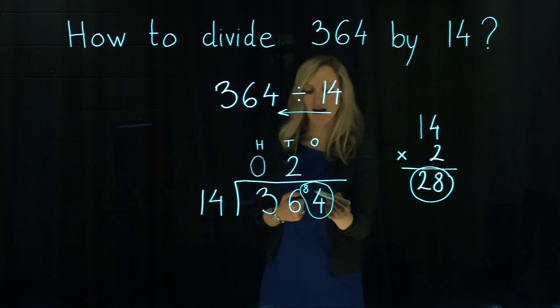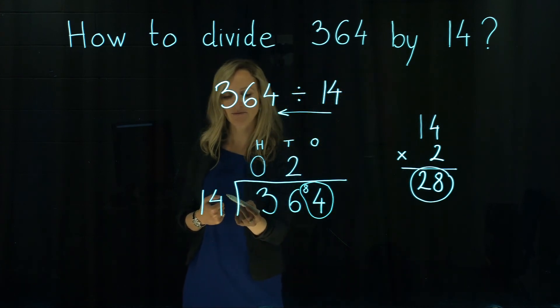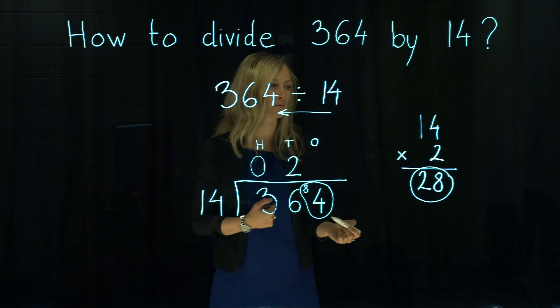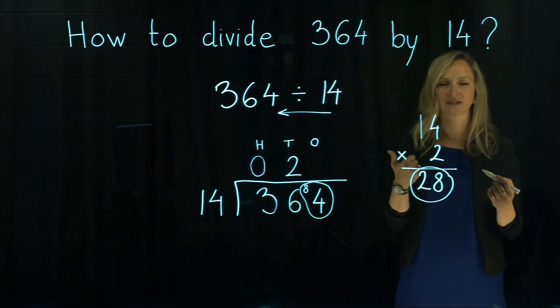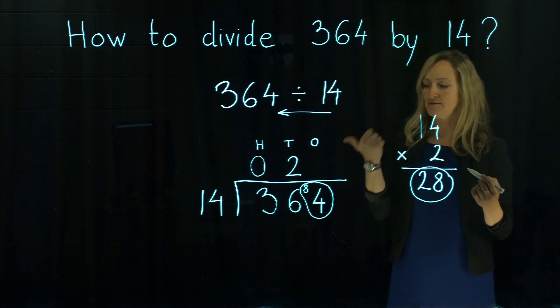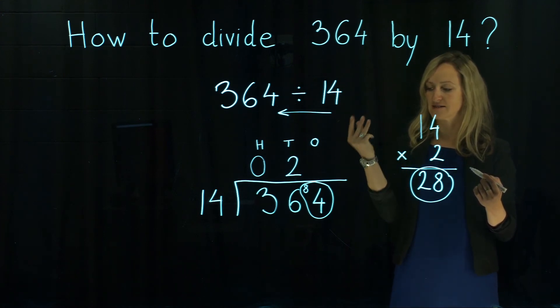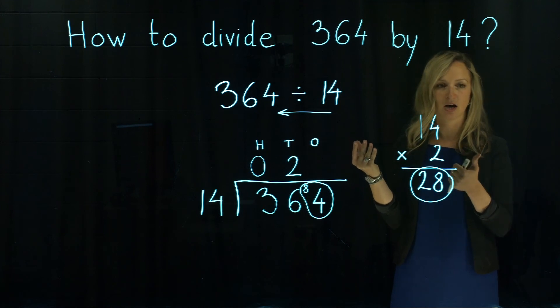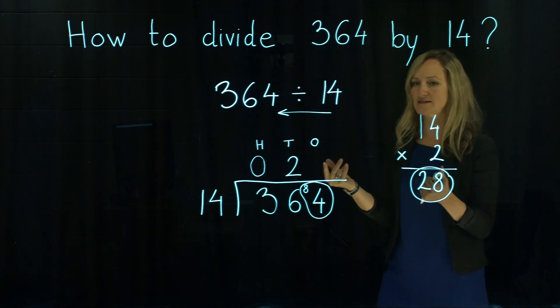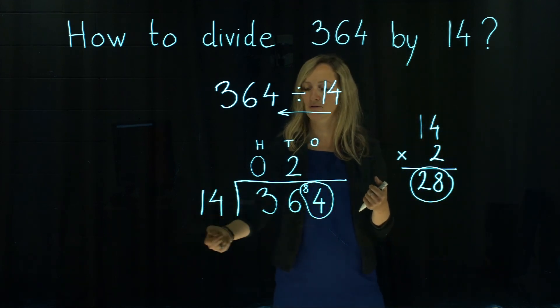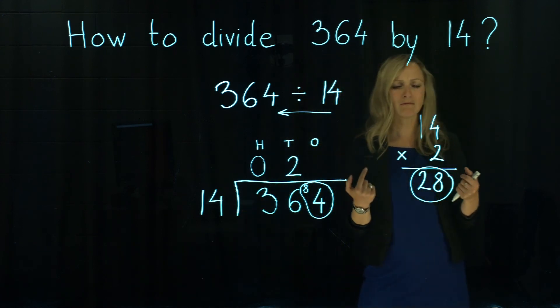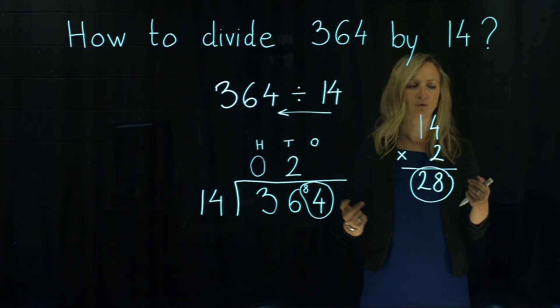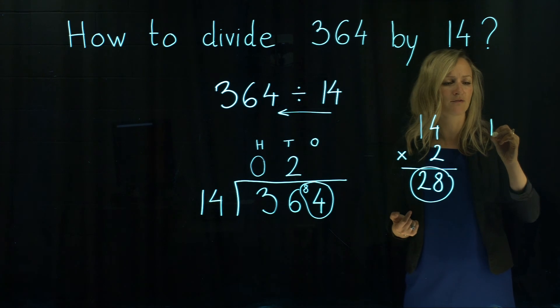And we ask ourselves, how many times 14 goes into 84? Let's estimate it again. So 14 is really close to 15. 15, 30, 45, 60, 75, 90. So we estimated our number 14 to 15 which means a bit more. So we might get actually 14 into 84 is 6 times.